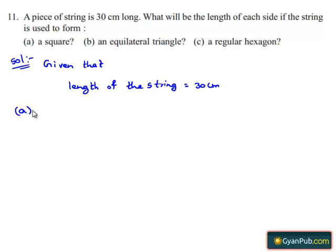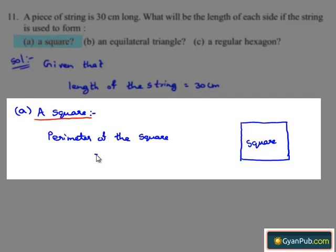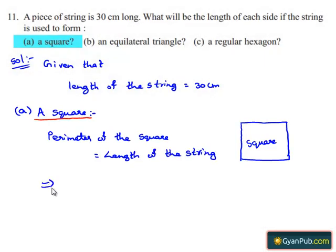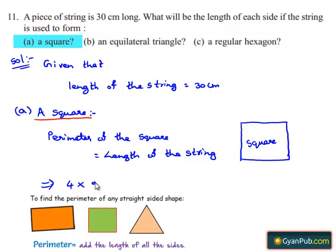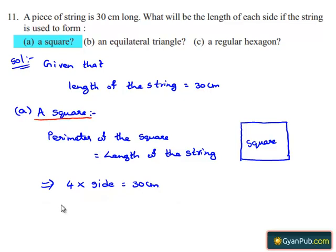consider the case in which the string is used to form a square. Here is the square. In order to bend the string in the form of a square, the perimeter of the square must be equal to the length of the string. This means we know that the perimeter of the square is 4 times the length of the side, which is equal to the length of the string, 30 cm.